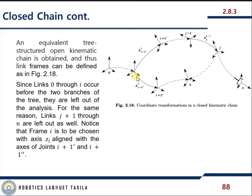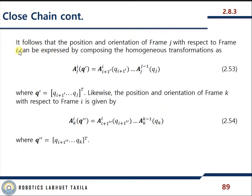So zi is defined such that i+1 dash and i+1 double dash are aligned. The position and orientation of frame j with respect to frame i can be expressed by composing homogeneous transformations along the chain — moving from j to j-1, then j-1 to j-2, and so on up to i+1 dash to i — where q dash is the set of variables q_i+1 dash and so forth.